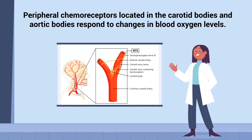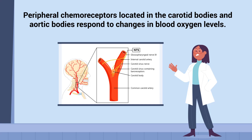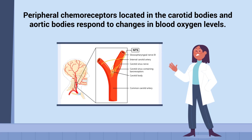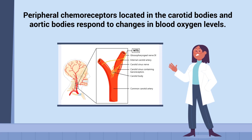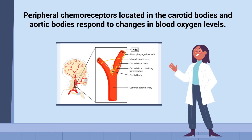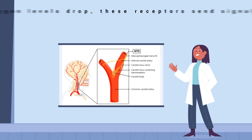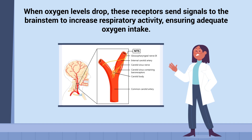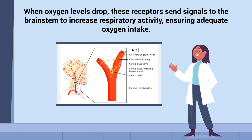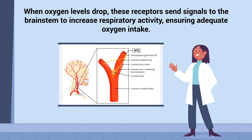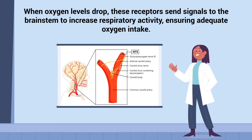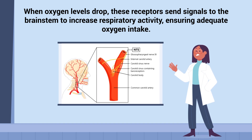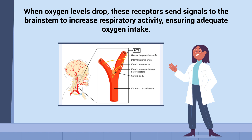Peripheral chemoreceptors, located in the carotid bodies and aortic bodies, respond to changes in blood oxygen levels. When oxygen levels drop, these receptors send signals to the brainstem to increase respiratory activity, ensuring adequate oxygen intake.